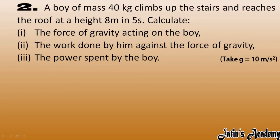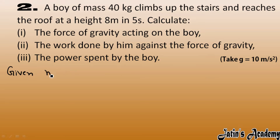A boy of mass 40 kg climbs up the stairs and reaches the roof at a height of 8 meters in 5 seconds. We have to calculate: the force of gravity acting on the boy, the work done by him against the force of gravity — they say against the force of gravity because the boy is moving upward and force of gravity acts downward — and the power spent by the boy. Given quantities: mass = 40 kg, height (displacement) = 8 m, time = 5 seconds.